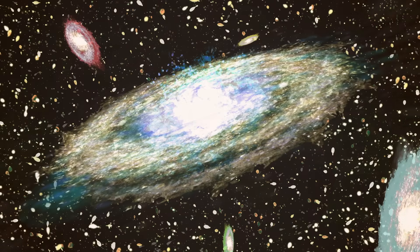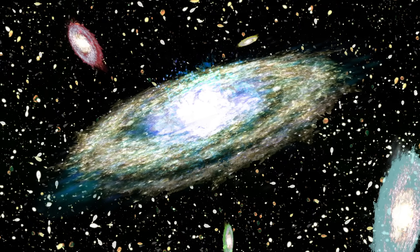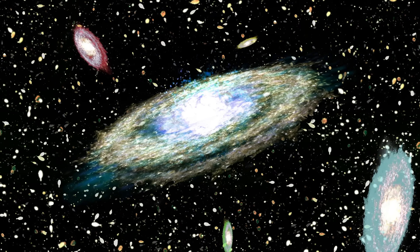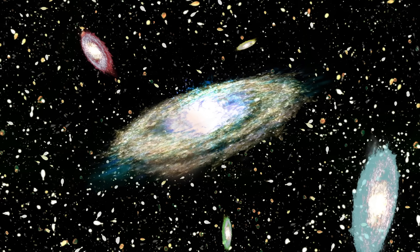Supernovae, giant stellar explosions, are one of the ways that stars die. These explosions are so bright that they outshine the galaxies where they occur. So even when we can't see individual stars in a galaxy, we can still see supernovae when they happen.